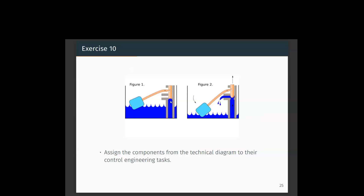These are a few examples where we use control mechanisms — some use computers, others are purely mechanical. From all these examples, we should be able to identify: what is the process, what sensors are used, what is the set point, what is the controlled variable, what is the manipulated variable, what are the possible disturbances, and what is the controller and its function.